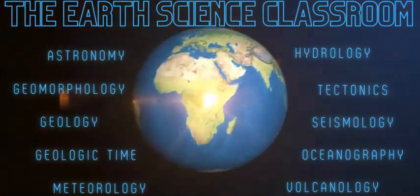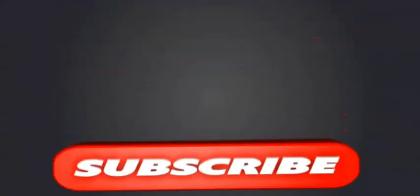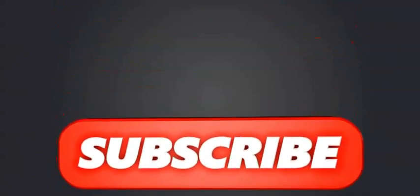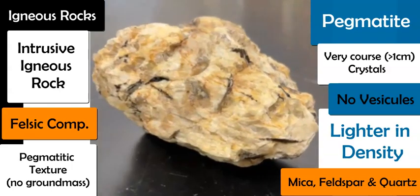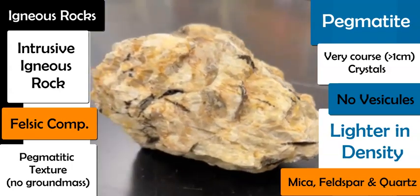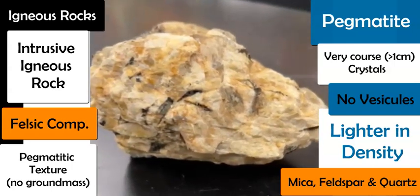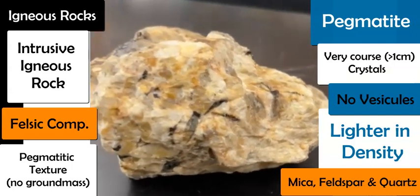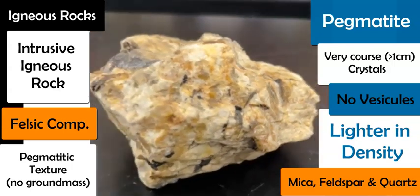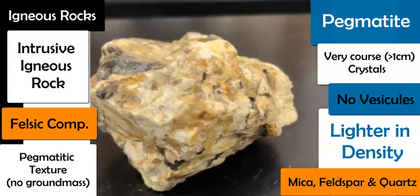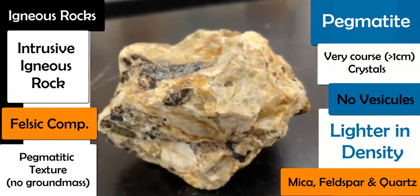Welcome back to the Earth Science Classroom. Today we're looking at pegmatite as one of our igneous rocks to highlight. This pegmatite rock is very easily distinguished from other igneous rocks that are perhaps a similar color, similar formation, or similar composition. Pegmatite is kind of stunning — it stands out because of its very large crystals and very coarse texture. The crystals are large, over one centimeter or 10 millimeters.